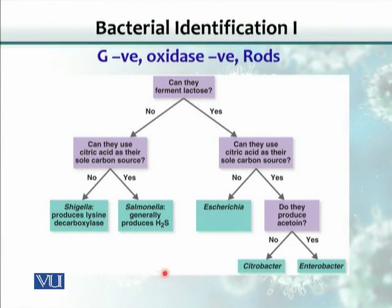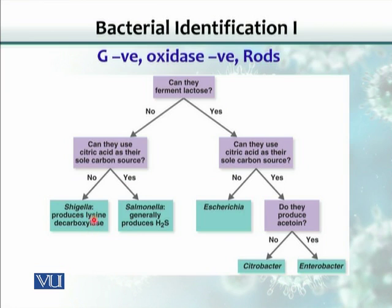This is just an example of gram-negative, oxidase-negative rods. Such algorithms are available for identification of microbes. We have an algorithm that asks: can they ferment lactose? If no, we further ask: can they use citric acid as their sole carbon source? If no, then we would say that this is Shigella, which produces lysine decarboxylase. These are the enzymes and their abilities to utilize various substrates, by which we can identify the species.